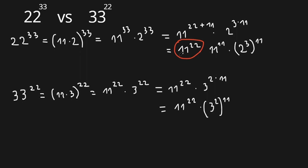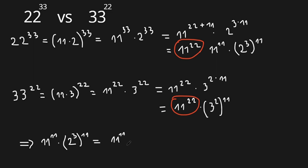Because both numbers share the same factor of 11 to the power of 22, we only need to compare 11 to the power of 11 times 2 to the power of 3, all to the power of 11, versus 3 to the power of 2 to the power of 11. Since 11 times 8 equals 88, we have 88 to the power of 11, which is larger than 3 squared equals 9, giving us 9 to the power of 11.